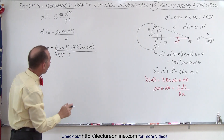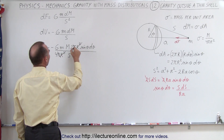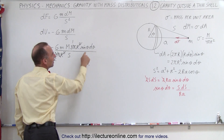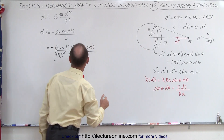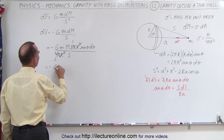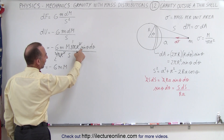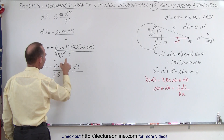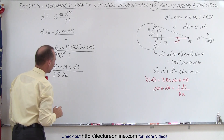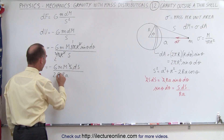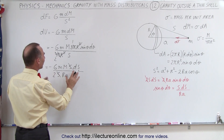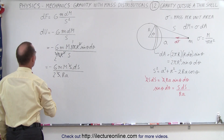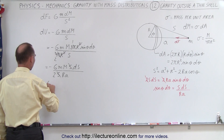We can simplify: the π and r² cancel, the 2 and 4 reduce to give a factor of 2 in the denominator. Now we replace sinθ dθ with s ds / (ra). The s in the numerator cancels with the s in the denominator, leaving only ds — which is why we used potential energy rather than the force equation. So dU = −G·m·M ds / (2ra).